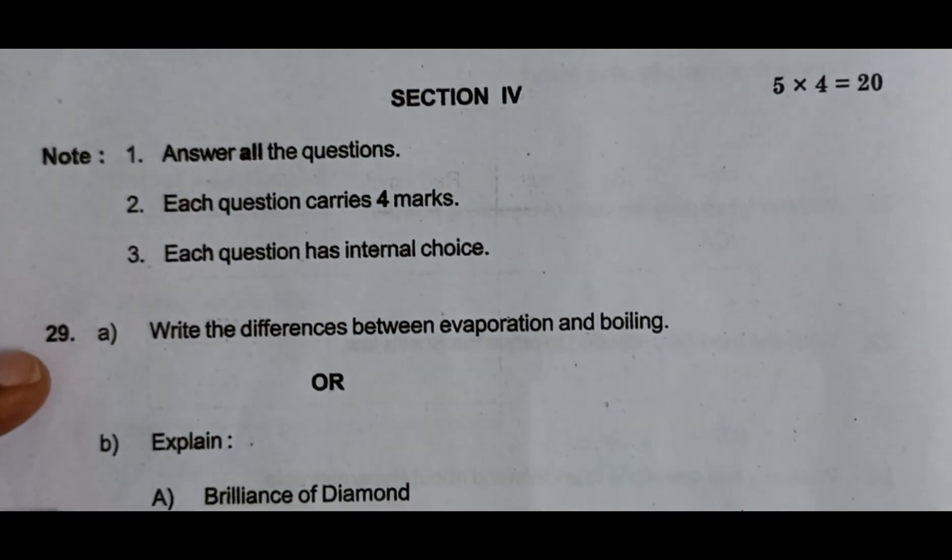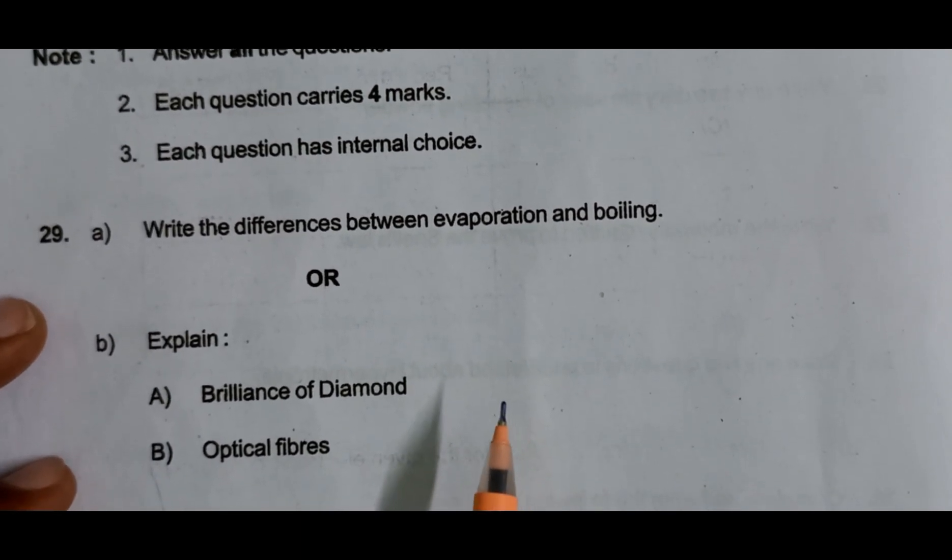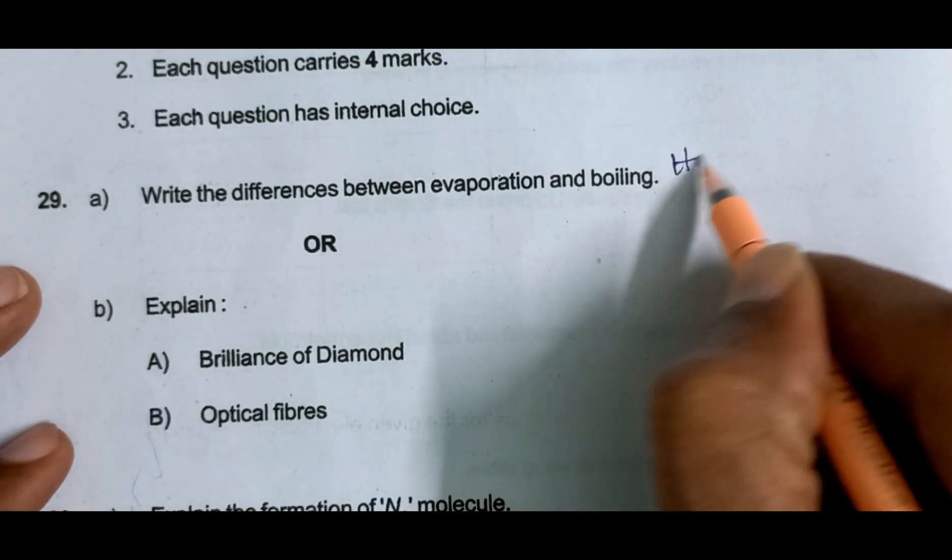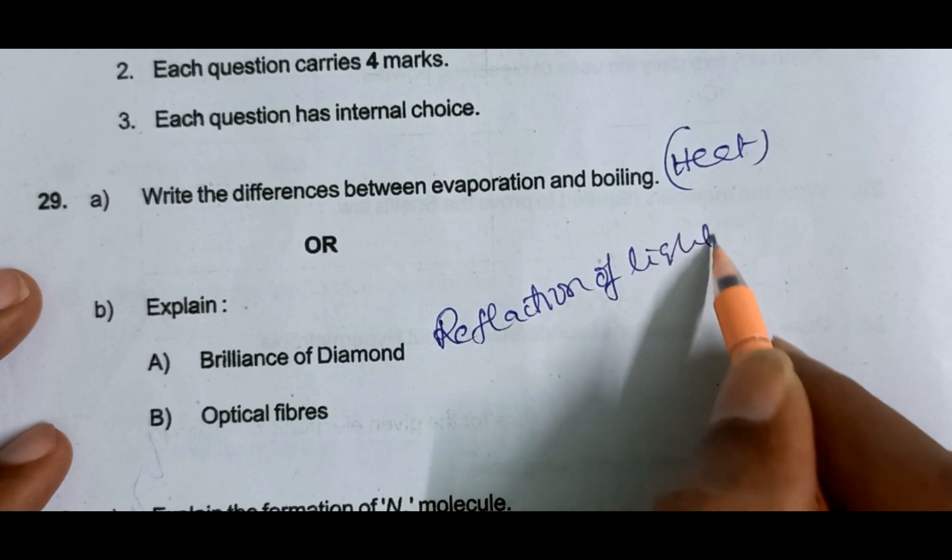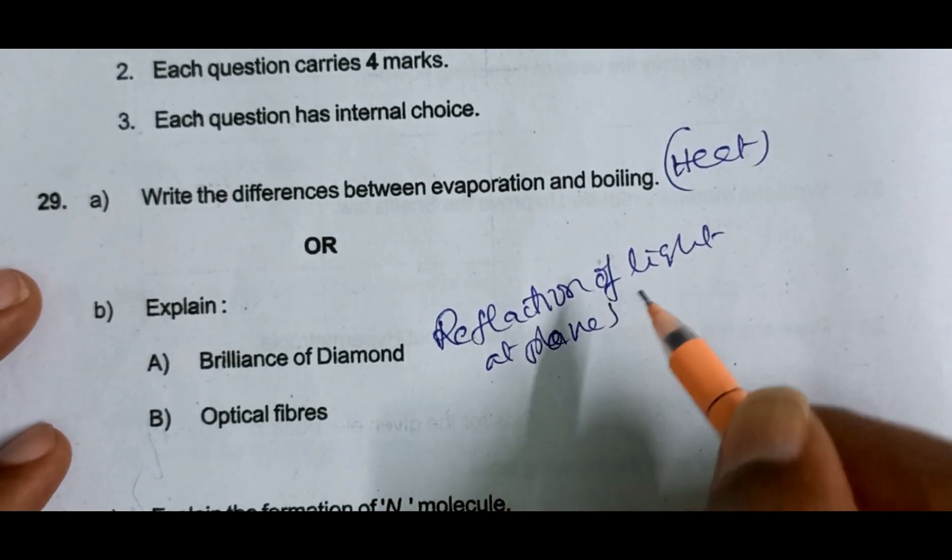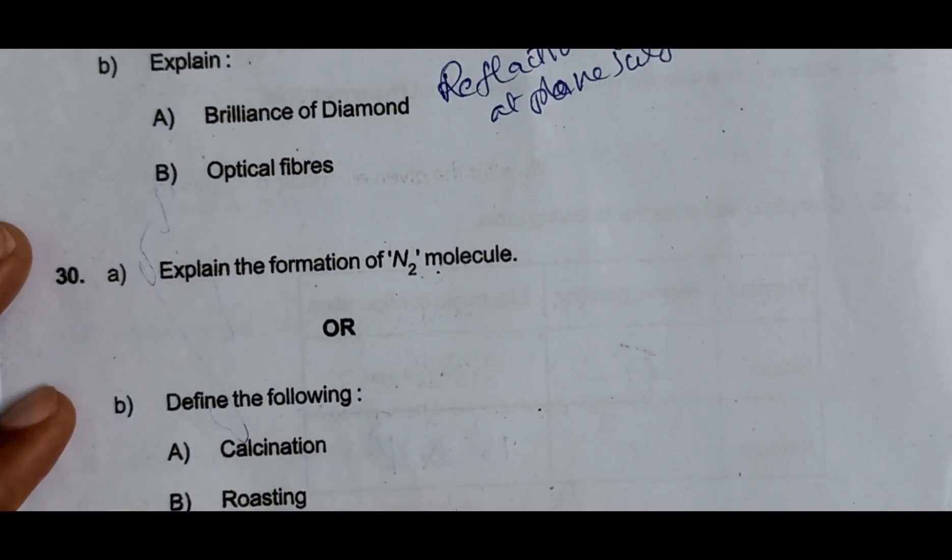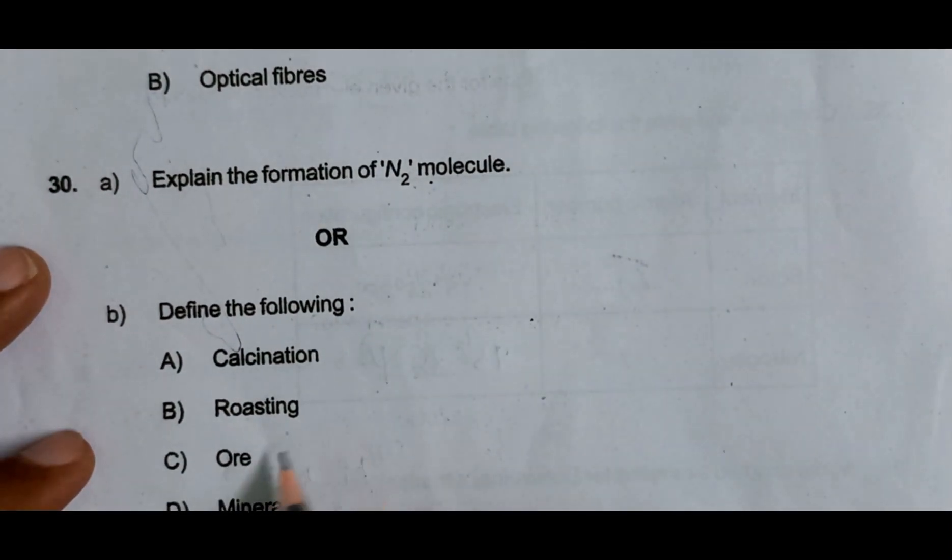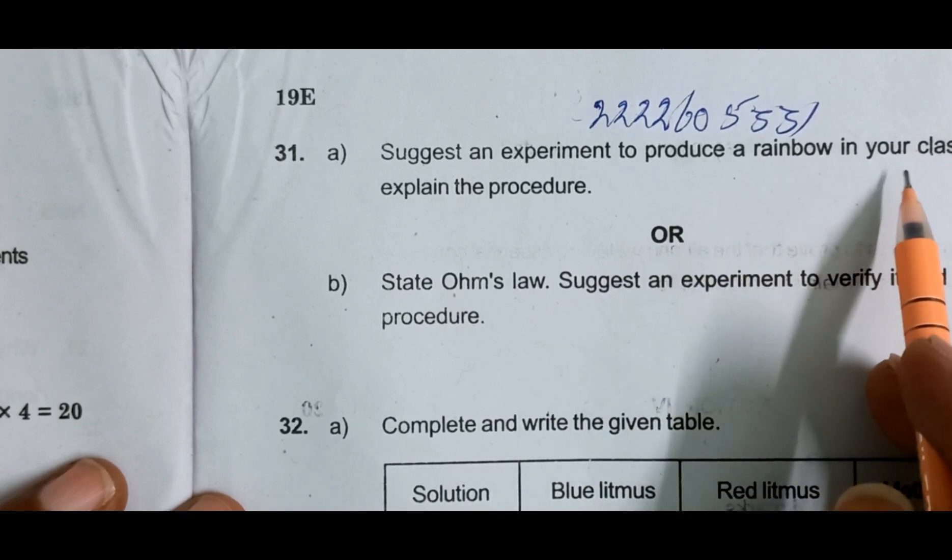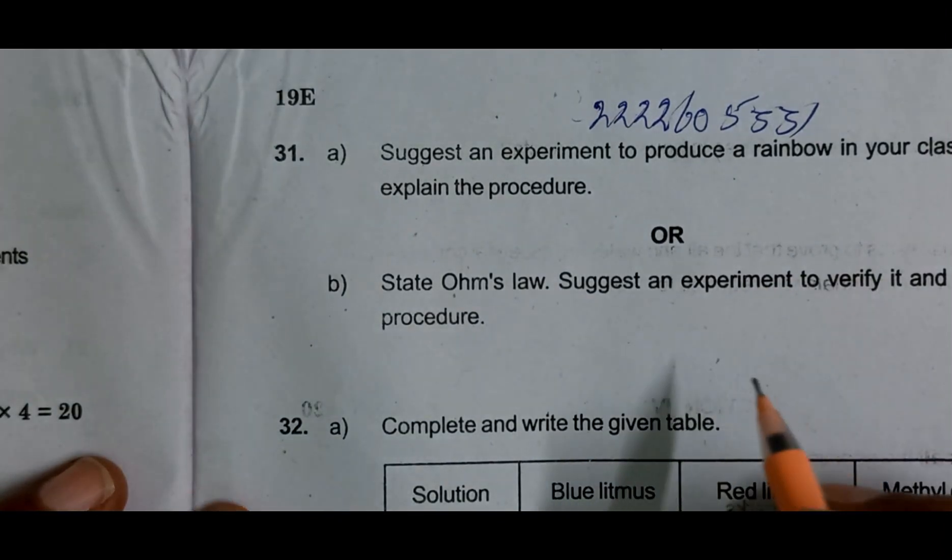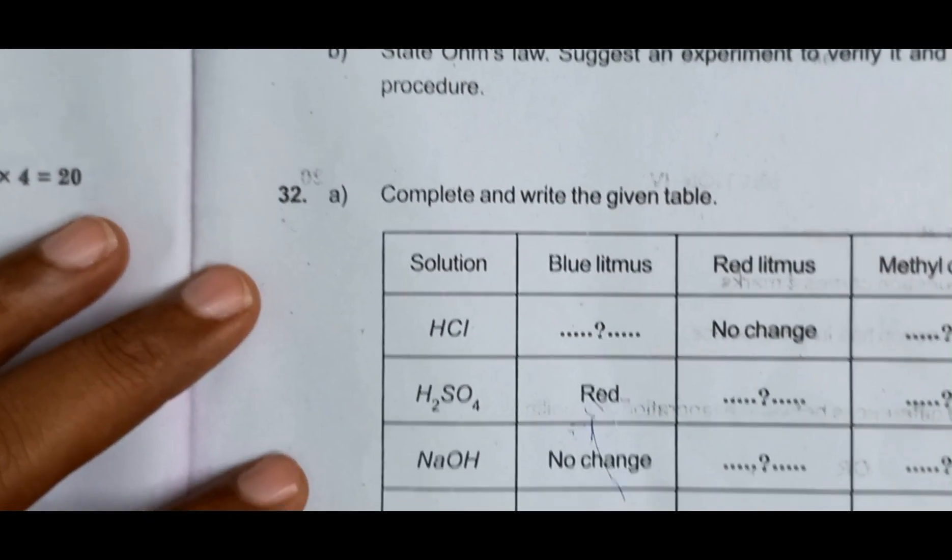Next, four mark questions. Differences between evaporation and boiling from heat chapter. Explain brilliance of diamond, optical fibers from refraction of light at plane surfaces. Chemical bonding into molecule, or define the following: calcination, roasting, ore and mineral from principles of metallurgy. Suggest an experiment to produce rainbow in your classroom, explain the procedure from human eye colorful world. State Ohm's law, suggest an experiment to verify it, explain the procedure from electric current chapter.